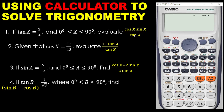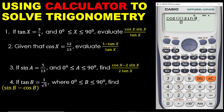So, cos X times sin X. This is a fraction, so before you enter it you need to click on the fraction button. On the top, I enter cos X: press cos, then alpha, then X, and close the bracket. Then I enter sin X: press sin, then alpha, then X, and close the bracket. So I have cos X times sin X on the calculator.